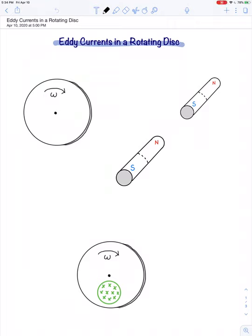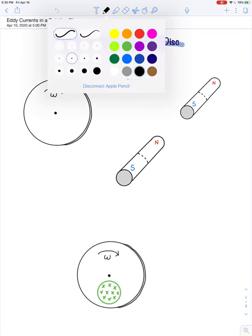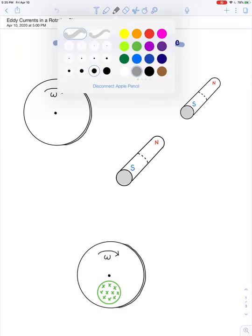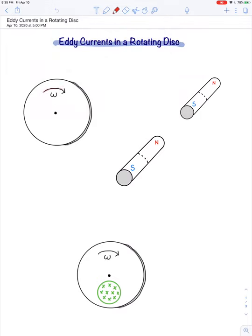Another example of eddy currents that are sometimes seen in demonstrations of Faraday's law can be seen in the magnetic braking of a rotating disk. Here we have a rotating disk that's rotating with an angular velocity shown here of omega.